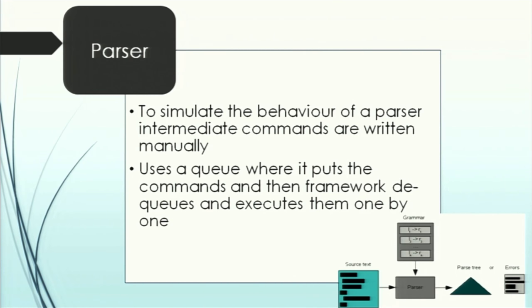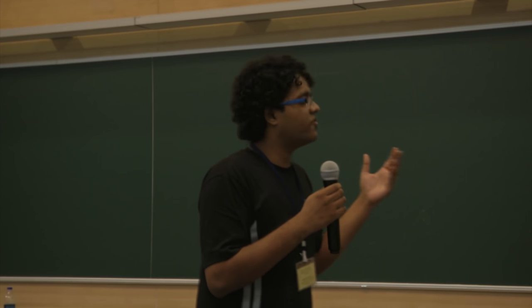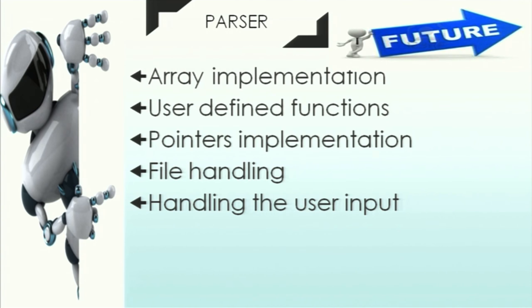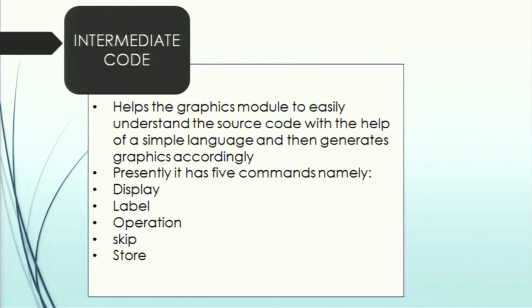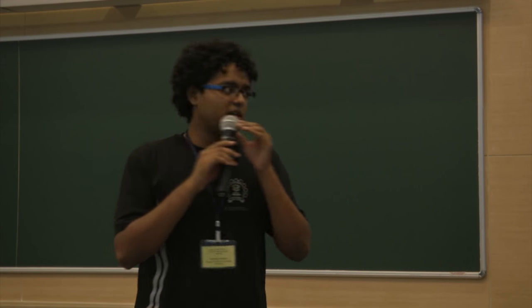Next we will move on to the parser. The parser we have right now is a hardcoded parser that simulates the behavior of an actual parser. The actual parser is still under construction. We hope to be able to complete it soon. This parser has a set of 30 to 40 files for which each of its lines is known and it generates the intermediate commands. These intermediate commands are then put in a queue which will later be taken and executed by the framework. The parser we have now, we would like to add these functionalities that have not been implemented as of yet: array implementation, user-defined functions, pointer implementation, file handling, and handling user input directly.